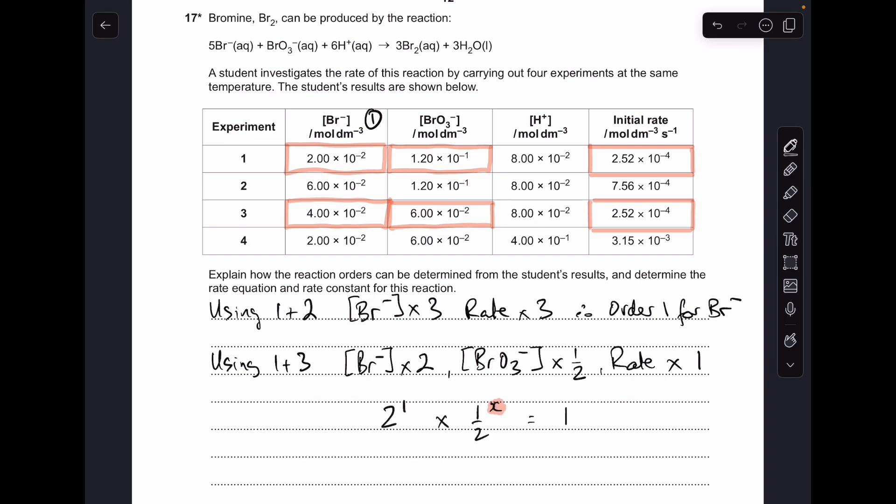So the way we're going to tackle this is using the fact that the product of the concentration changes raised to their respective orders has to equal the overall rate change. So you can see that the Br- concentration times two, but we know it's to the power one, it's first order, so two to the power one when multiplied by a half to the power x.